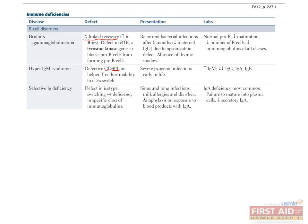Selective immunoglobulin deficiency results in depressed levels of specific immunoglobulins depending on which type the patient has. IgA deficiency is the most common, due to a failure of B cells to mature into immunoglobulin-secreting plasma cells. Patients experience sinus and lung infections, as well as milk allergies and diarrhea. One of the more life-threatening manifestations is the risk of anaphylaxis upon exposure to blood products containing IgA; as a result, patients must be given washed red blood cells.